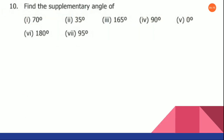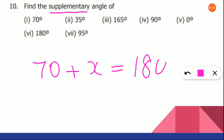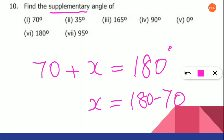Now look at the 10th question. Find the supplementary angle of 70 degrees. As we did in the previous sum, 70 plus an unknown angle will give us — it is supplementary here — so it should be 180 degrees. Shall we find out X now? So 180 minus 70 will give us X. The answer is 110 degrees. So the supplementary angle of 70 degrees is 110 degrees.